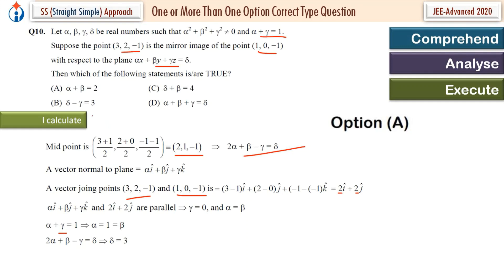Option A: α + β = 2. Correct. 1 + 1. Then option B: δ - γ, 3 - 0 = 3. Correct.